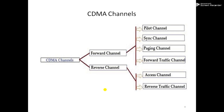The reverse channel is the mobile-to-cell direction of communication — the uplink path. It consists of the following channels: the access channel, used by the mobile station to establish communication with the base station or to answer paging channel messages. The access channel is used for short signaling messages such as call setups, responses to pages, and registrations. The reverse traffic channel is used by individual users in their actual calls to transmit traffic from a single mobile station to one or more base stations.